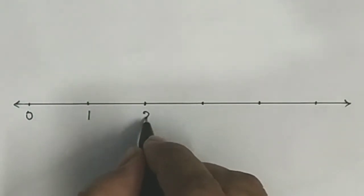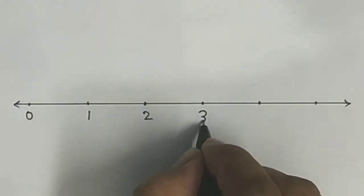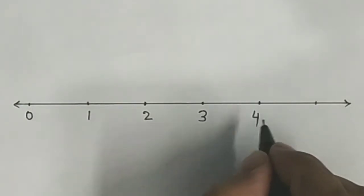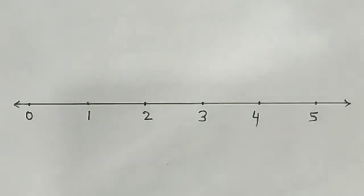I will number it. Now, where there is 2, I will draw a perpendicular line.